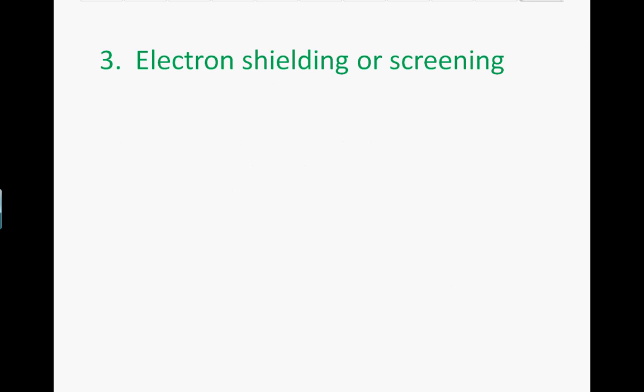Electron screening or shielding is an effect where the electrons from the inner shells repel outer ones and thereby weaken the force of attraction between the nucleus and the outer electrons.